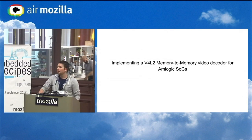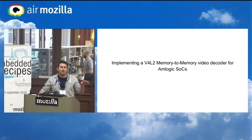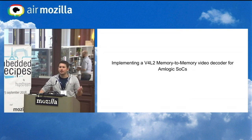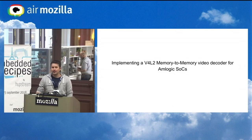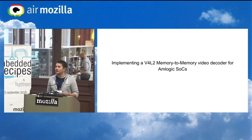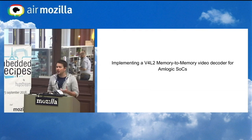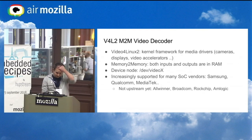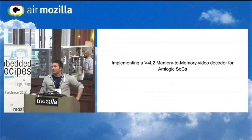I looked on my shelf and there was a Raspberry Pi and an Odroid C1. The Odroid C1 runs on an Amlogic S805 SoC. I went to the Amlogic community to see what was missing in the mainline kernel, and I saw that they had no support for video decoding yet. Video decoding on these chips is great, so I figured I'd just jump into it.